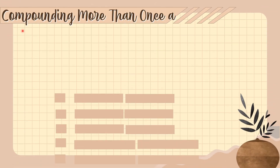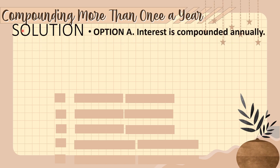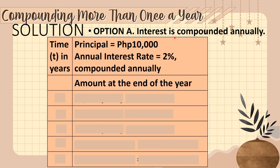Let's first have a solution for Option A, where interest is compounded annually. We have a table showing time in years, the principal of 10,000 pesos, annual interest rate of 2%, and the amount at the end of the year. For the first year, we have 10,000 times 1.02, which is 10,200 pesos.